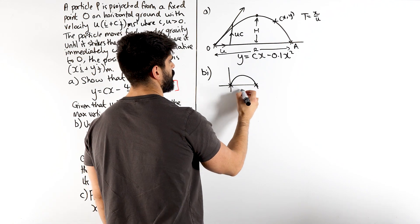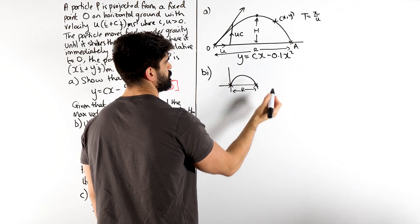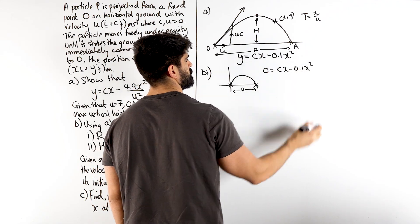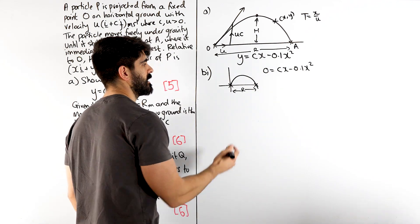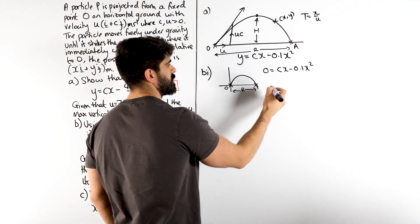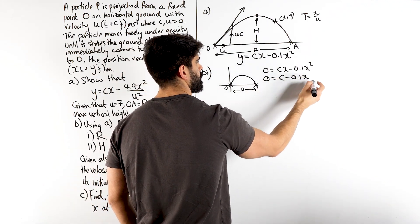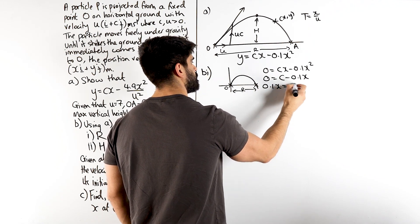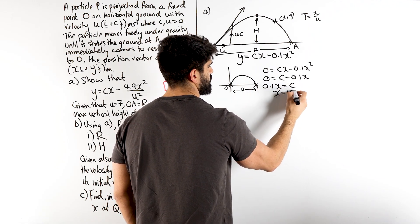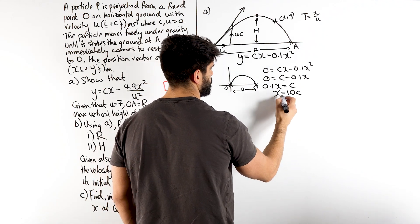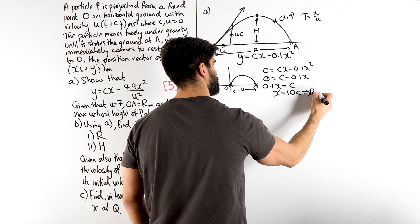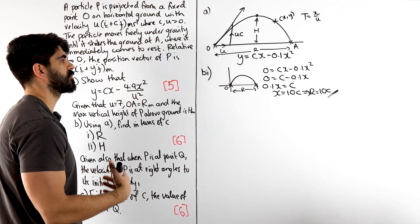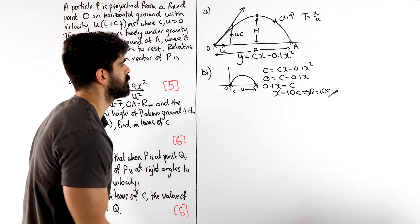So, to work out R, all we need to do is find the roots, which means make this equal 0. Okay? We can divide through by X because this is X is 0, we're not interested in that. So, you move that over. The X value is your R. So, X is 10C, which is R.